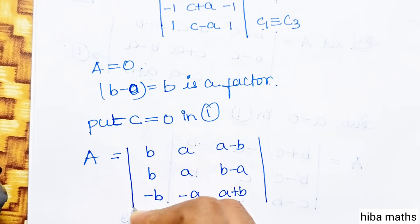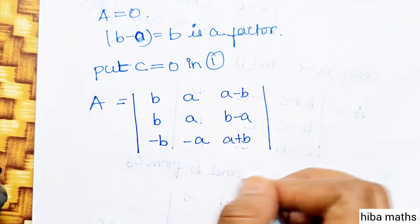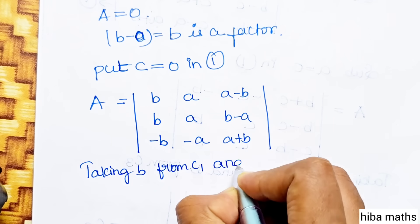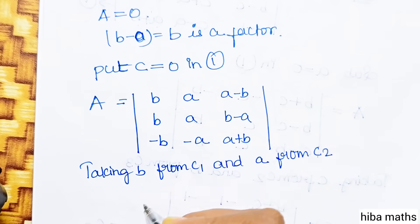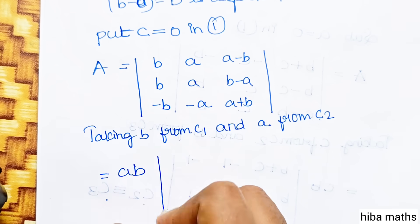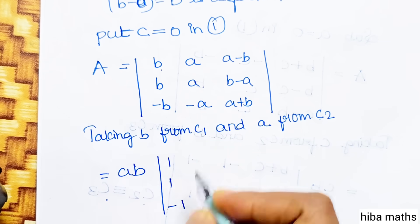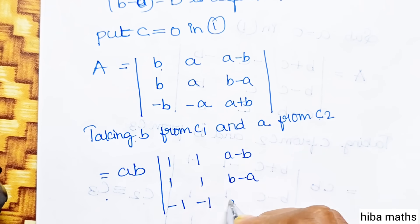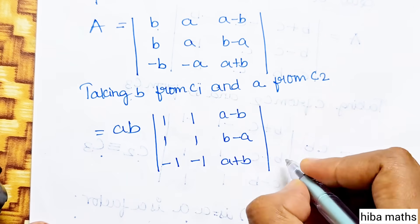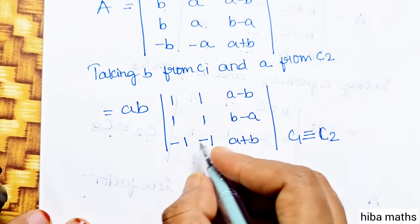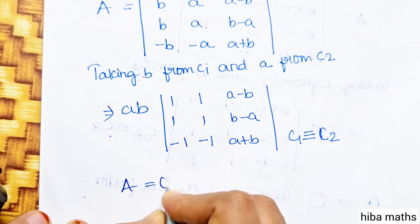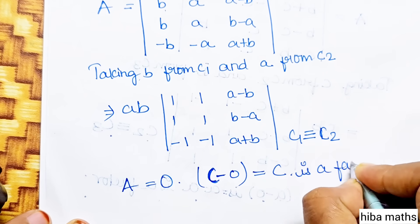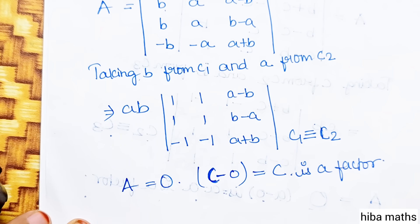Therefore A value is 0 and B minus A equals B, so B is a factor. We need to rearrange the matrix — the columns contain B, C, and A entries respectively. Here column 1 has B, column 2 has C, column 3 has A. After the changes, C is 0 and A is minus A. The third column is changed. Taking B from C1 and A from C2.